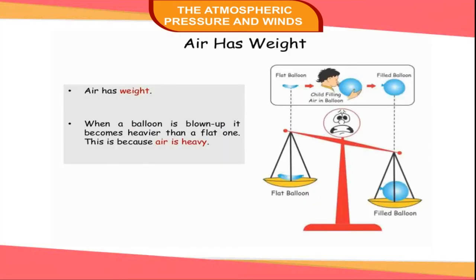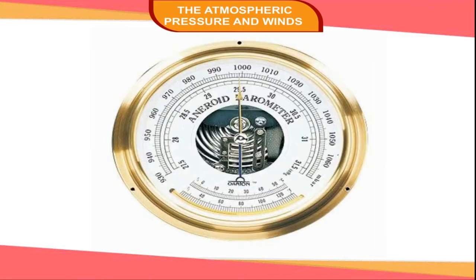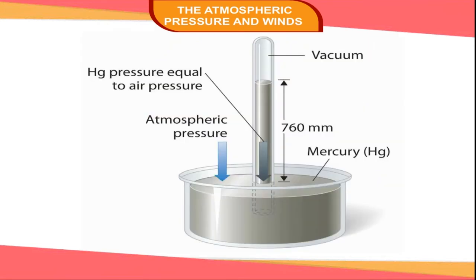Atmospheric pressure: Air has weight and it exerts its weight as pressure on the surface of the earth. This weight of air is called atmospheric pressure. It is measured with the help of an instrument called a barometer. The normal atmospheric pressure at sea level is about 76 cm of the mercury column in the barometer. The pressure varies from place to place and time to time. It depends on the temperature and altitude.